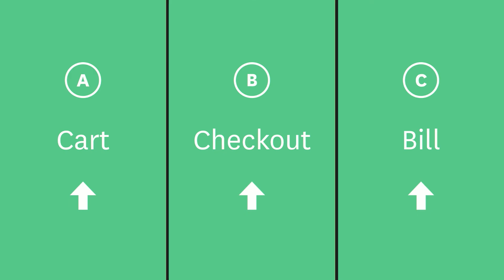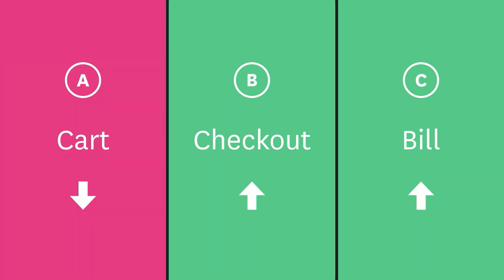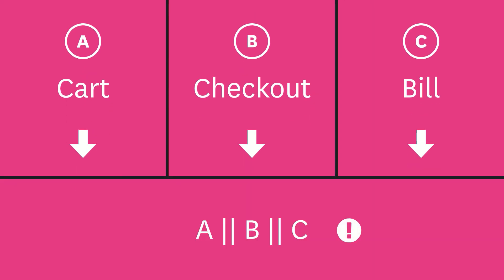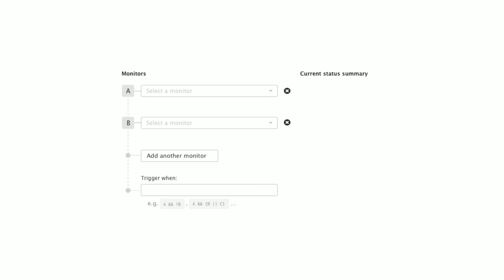A second use case is something like a microservice environment. Let's say I have a string of dependent services during my e-commerce checkout process, and one of those services goes down. In the current system, each of those dependent services is going to go down, and I'm going to start getting alerts for all of them. That's a problem. So with composite monitors, I can string those together via custom rules and get one notification instead of however many.